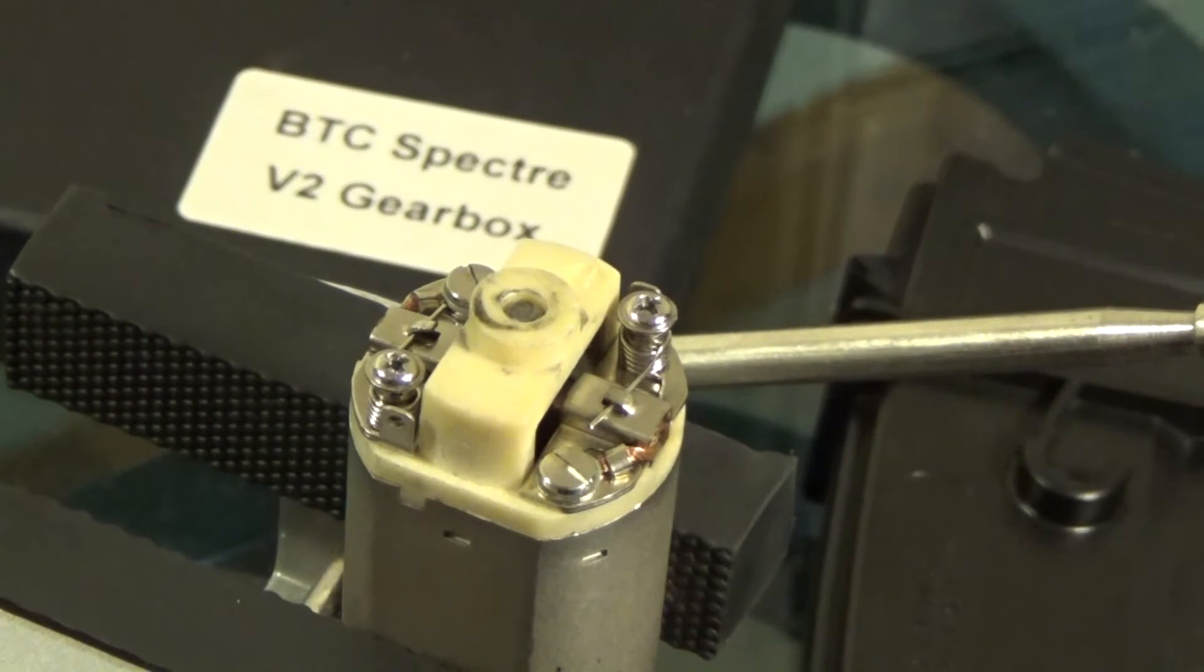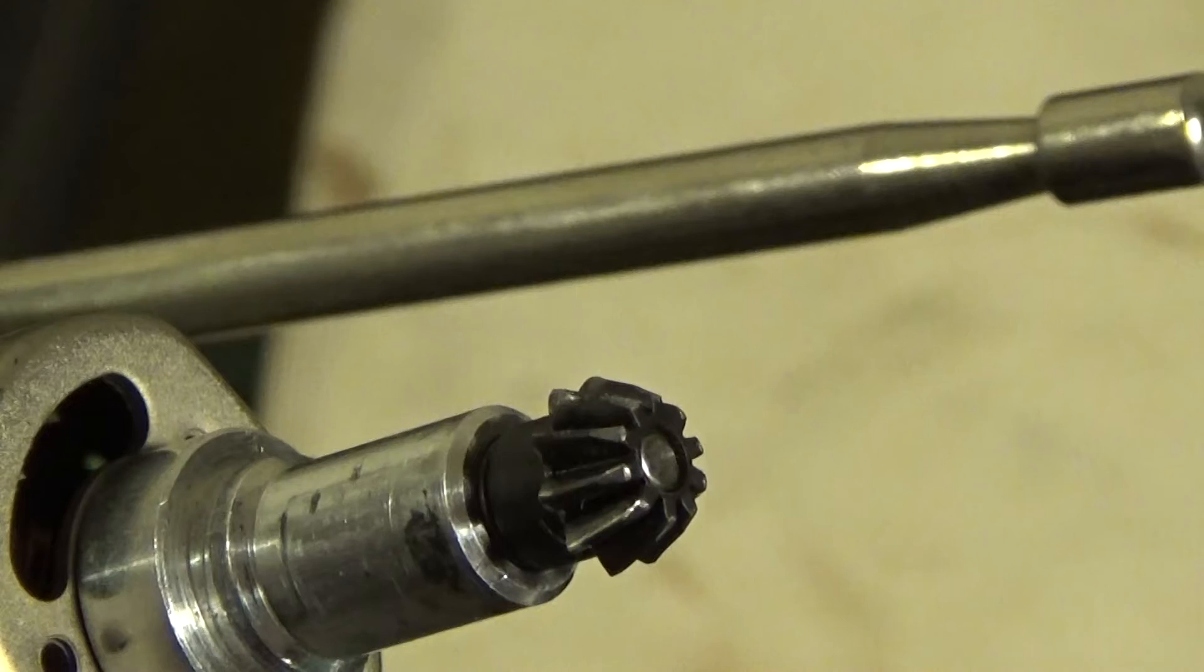The end bell contains the brushes, the brush springs, the rear of the armature, and the armature bearing. This one is a cream color and has screws that hold it to lock inside the can. Most stock motors do not have this nifty feature, however.